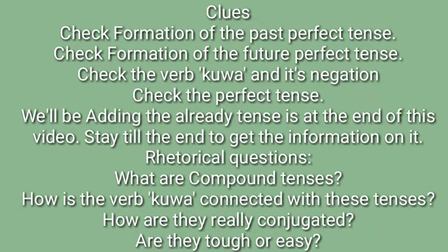Check the formation clues before watching this video. If you don't know much about them, you can check this video and then go check the other videos mentioned as clues. You need to know the formation of the past perfect tense and the future perfect tense before you can know how to negate them. Also check the verb kuwa and its negation.